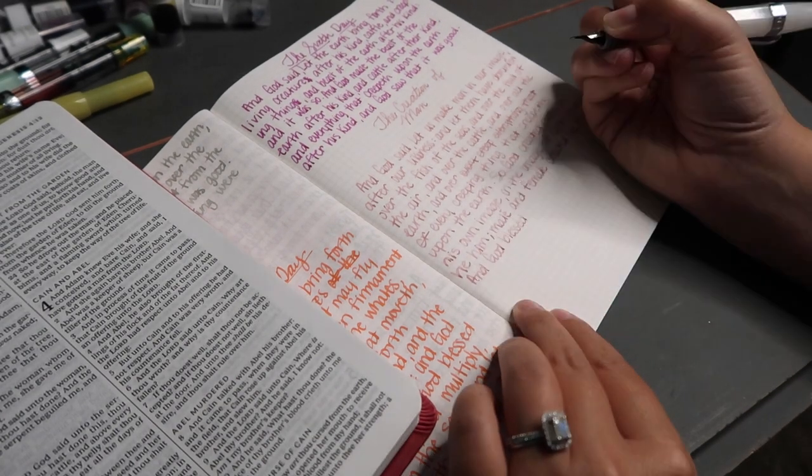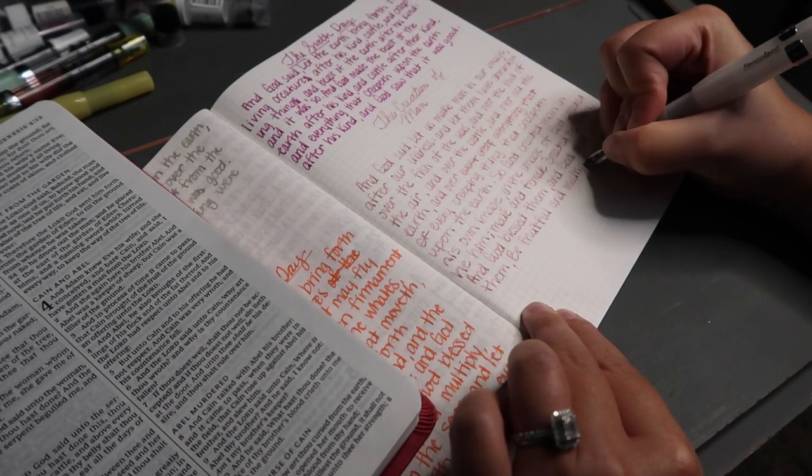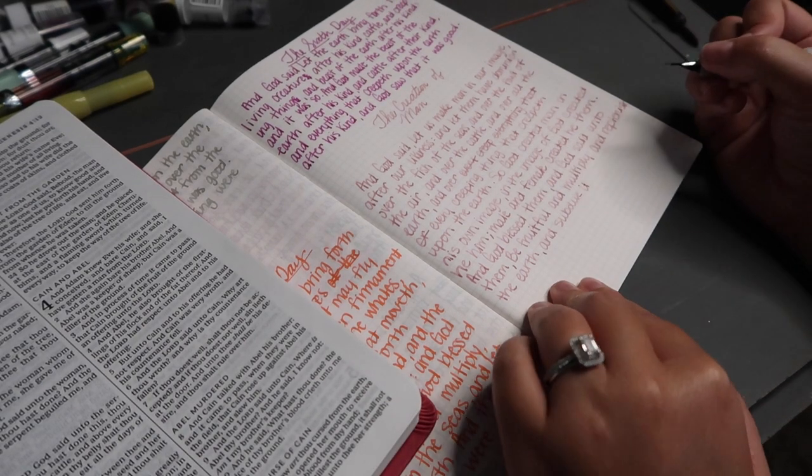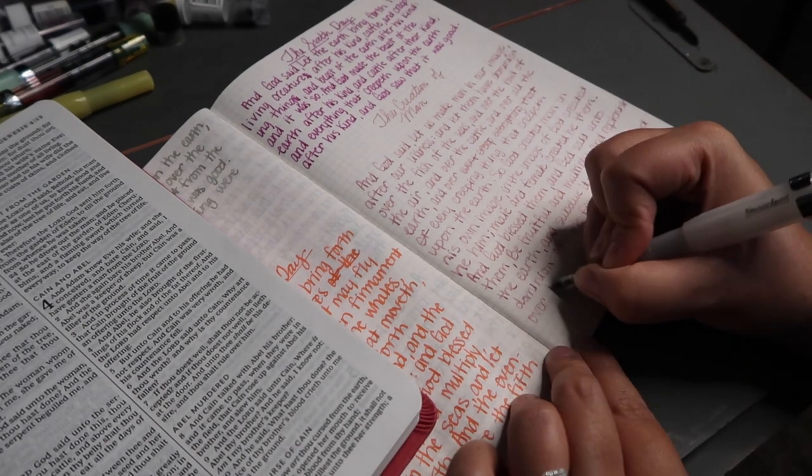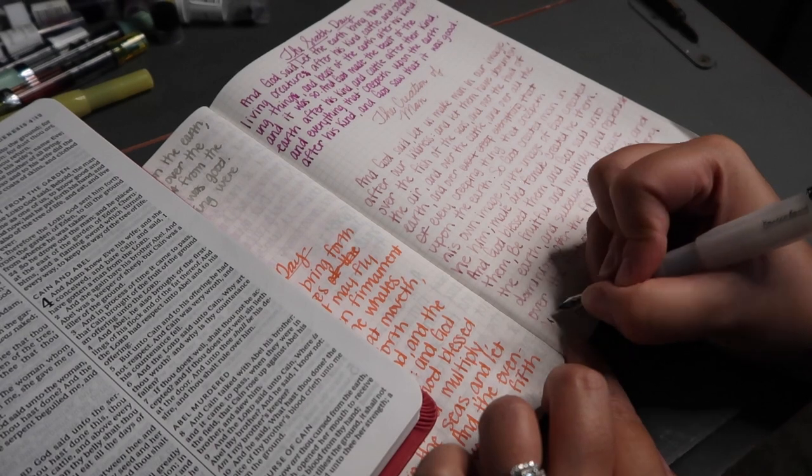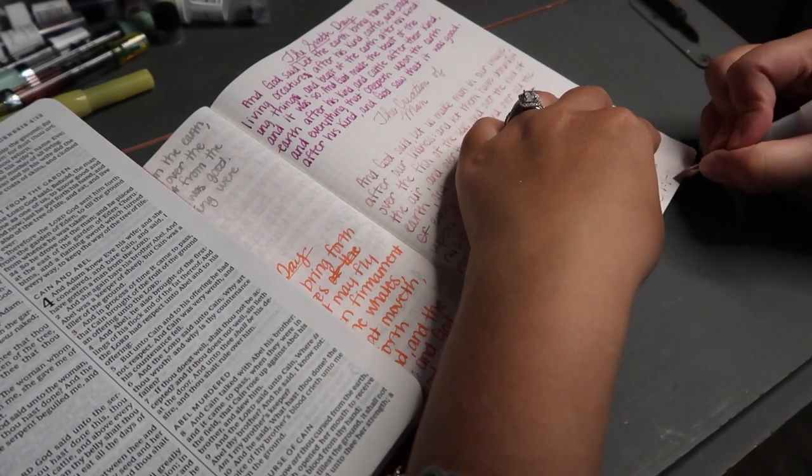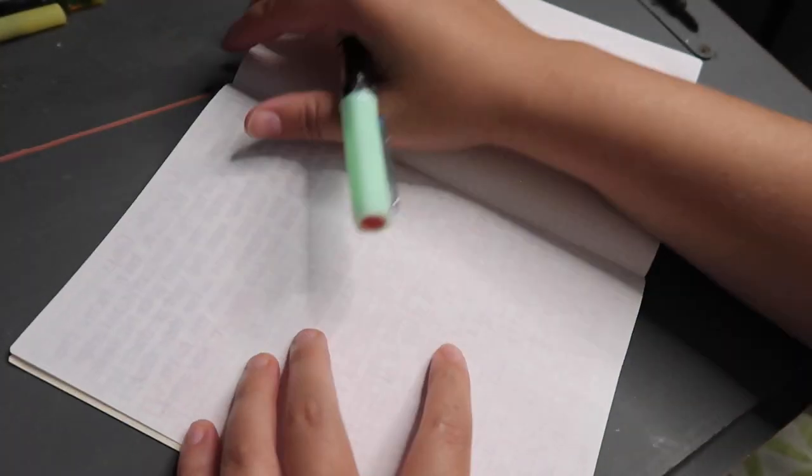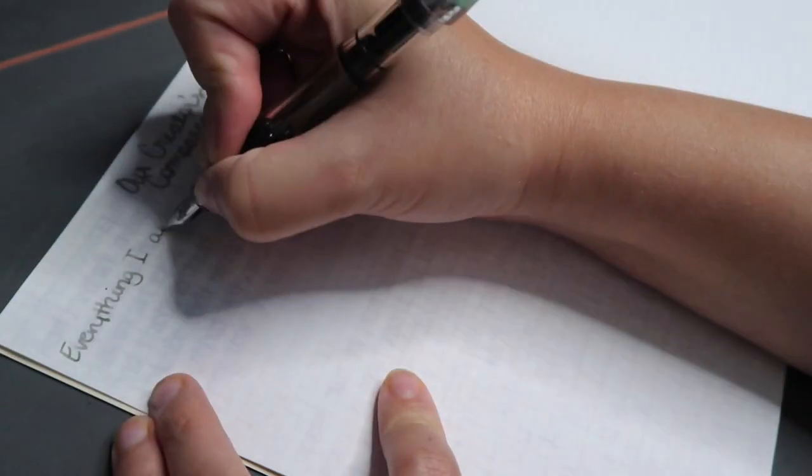And let them have dominion over the fish of the seas, and over the fowl of the air, and over the cattle, and over all the earth, and over every creeping thing that creepeth upon the earth. So God created man in his own image, in the image of God created he him. Male and female created he them. And God blessed them, and God said unto them, Be fruitful and multiply, and replenish the earth, and have dominion over the fish of the sea, and over the fowl of the air, and over every living thing that moveth upon the earth. And all of that is Genesis 1, 1 through 28.